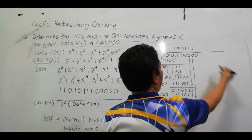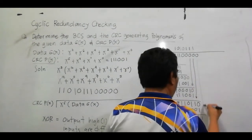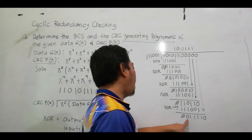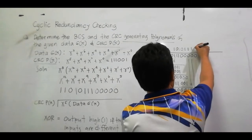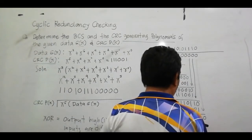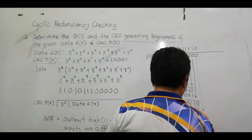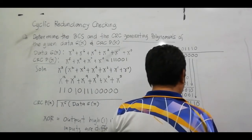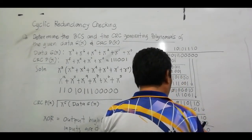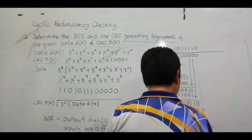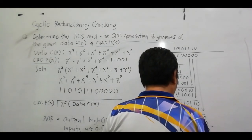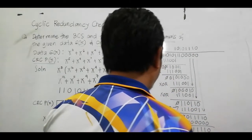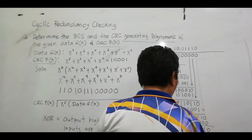Cancel out this 0 and bring down another 0. The most significant bit is 0, so the quotient is 0. Multiply 0 times divisor gives all zeros: 0 0 0 0 0 0. XOR: the result is 1 1 1 1 0. So our CRC generating polynomial remainder is 1 1 1 1 0.